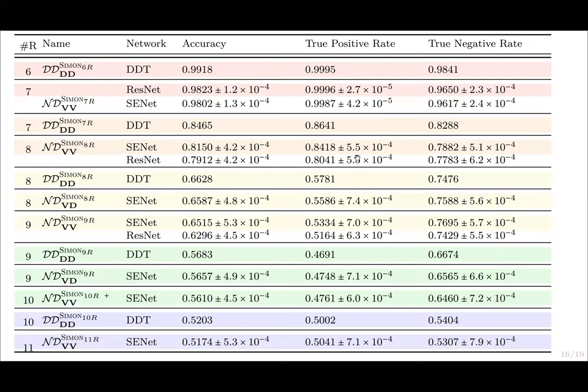To answer the second question, we produced various neural distinguishers on round-reduced SIMON 32/64 and provided comparisons with their full differential distribution table-based counterparts.